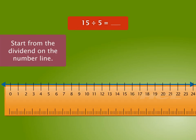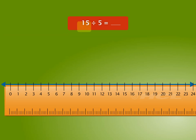We start from the dividend on the number line. In the given problem, the dividend is 15. So, we start from 15 on the number line.